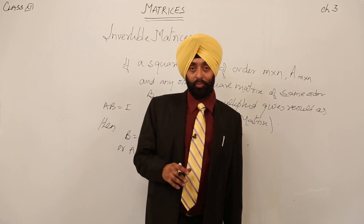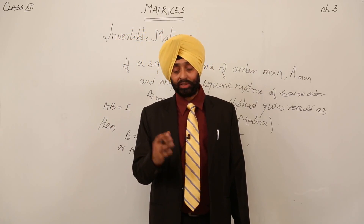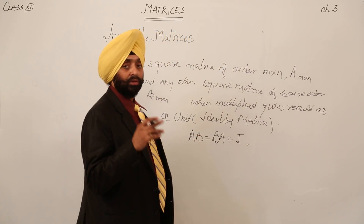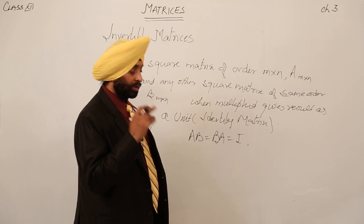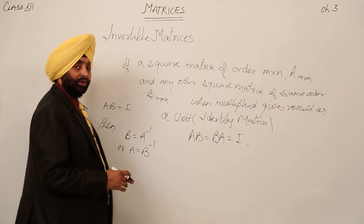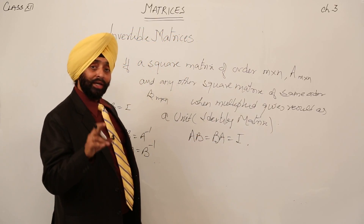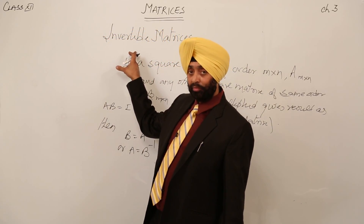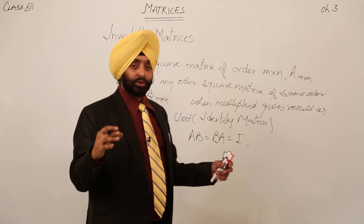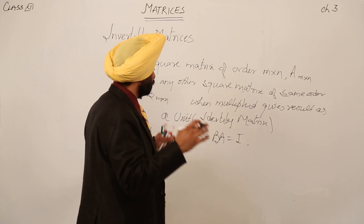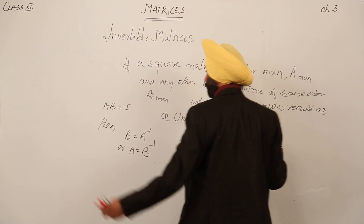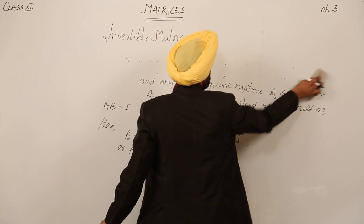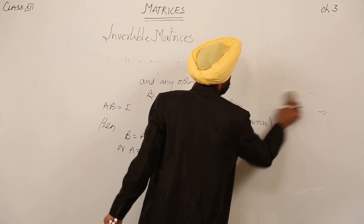To summarize: two square matrices of the same order, when multiplied, give the result as the identity matrix — this is called an invertible matrix. When B equals A inverse, then A is called an invertible matrix. Now let's move on to a very nice example.